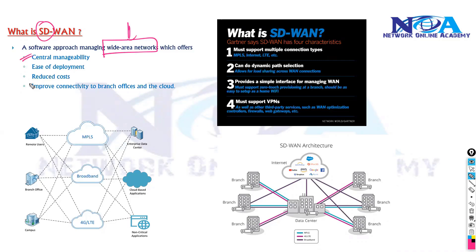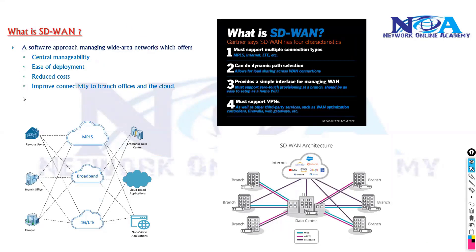SD-WAN offers plenty of advantages like centralized management — we manage everything from a centralized controller — which makes your job easier, reduces cost, and improves connectivity of your branch offices. Before getting into SD-WAN, we need to understand the problems with traditional WAN. When we talk about SD-WAN, it's more or less the same WAN — we still use MPLS, broadband, and 4G networks — but the difference is we're redefining this with automation concepts.